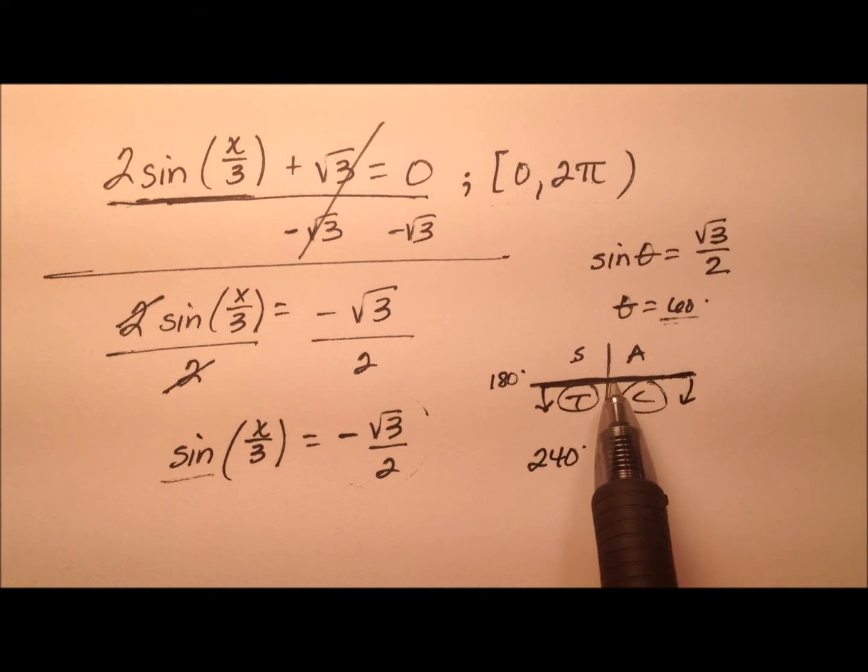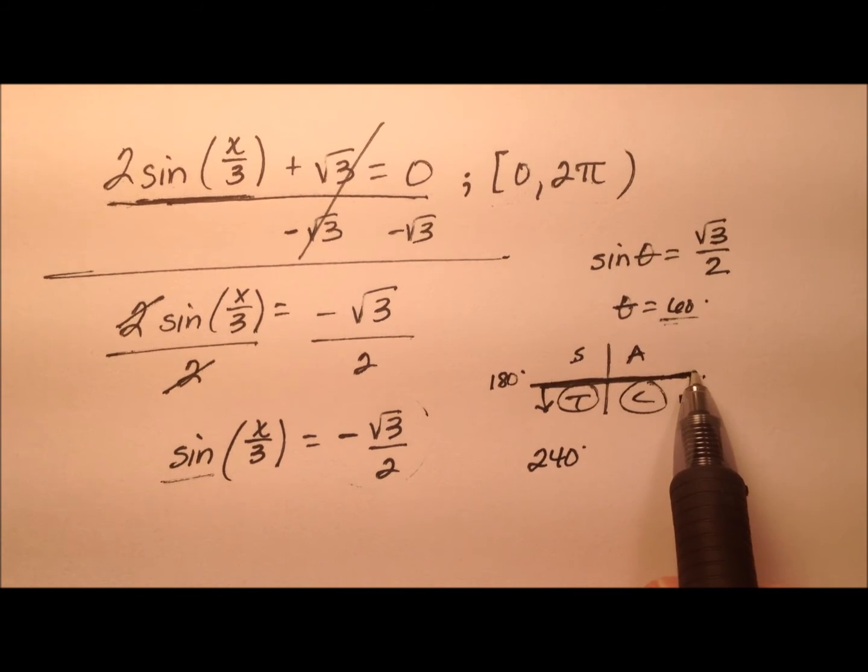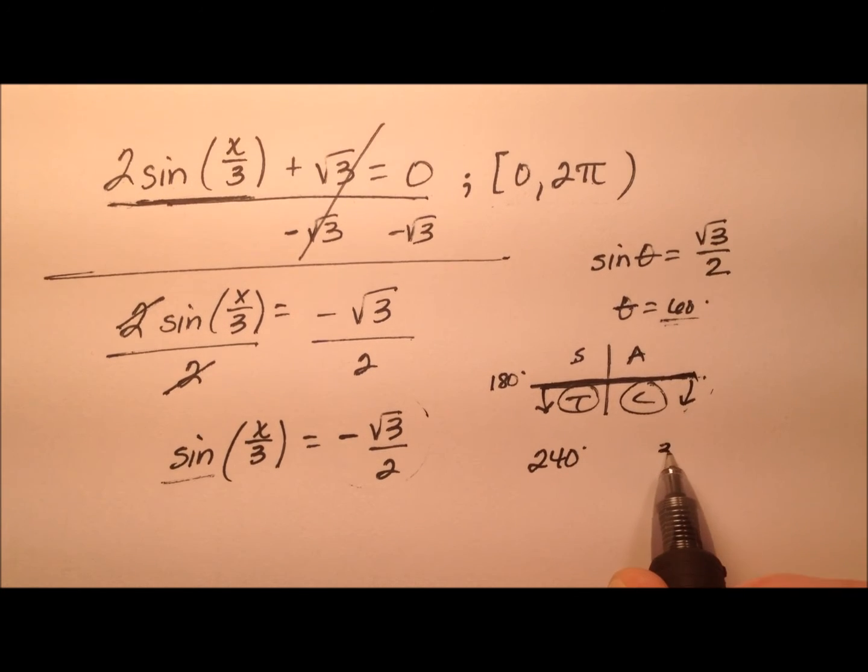And then over here on the positive x-axis, you could say 0 minus 60, well that's going to be negative, or 360 minus 60, and that'll be 300 degrees.